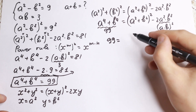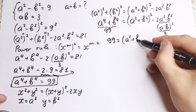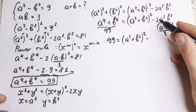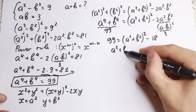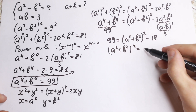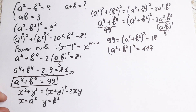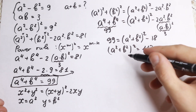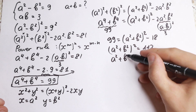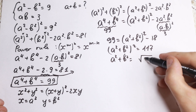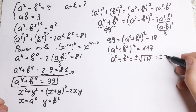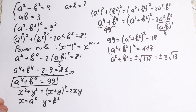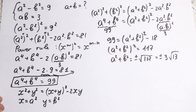So we find that (a² + b²)² equals 117, therefore a² + b² equals the square root of 117 — plus or minus. And since 117 equals 9 times 13, this equals plus or minus 3 times the square root of 13. So our sum of squares, a² + b², equals plus or minus 3√13.